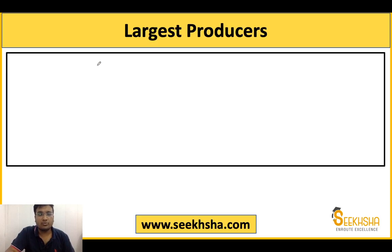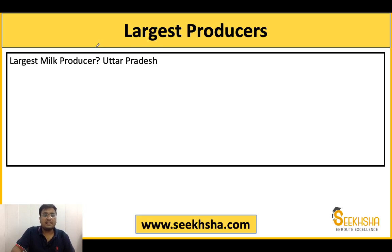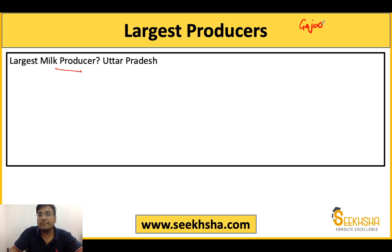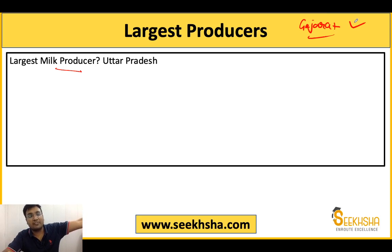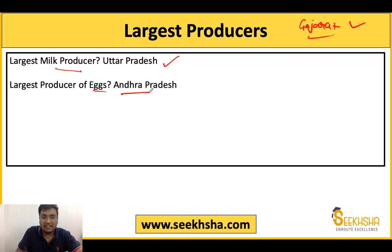Now we see the largest producers. There are some largest producer data points which are asked in IBPS, AFO, NABARD, and general knowledge exams — important for every exam. The most important milk production: the largest milk producing state in India is Uttar Pradesh. The largest egg producer in India is Andhra Pradesh. Each of these statements is a direct exam question.